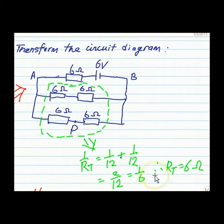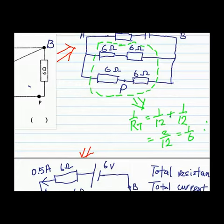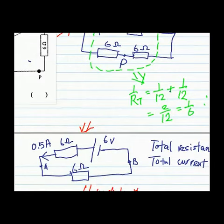You can further transform the circuit diagram into something that looks like this. Now examine across the two points A and B, and you have a 6-ohm resistor.